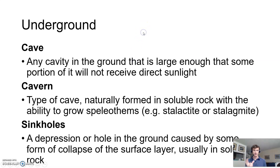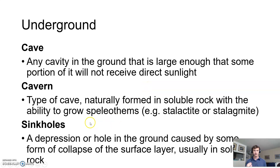We're talking about caves, caverns, and sinkholes. A cave is a cavity, a big hole in the ground that is large enough that some of it is dark — not well exposed to sunlight. A cavern is a sort of cave which has the ability to grow stalactites and stalagmites, and we call these together speleothems. A sinkhole is a depression, a hole in the ground, which is directly caused by a collapse of the surface.